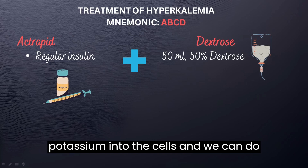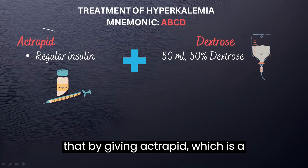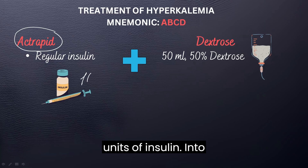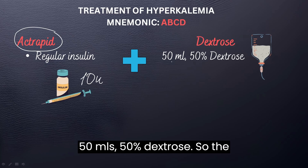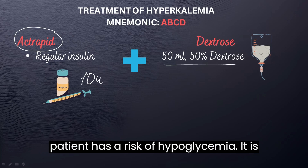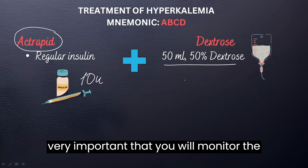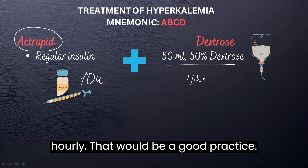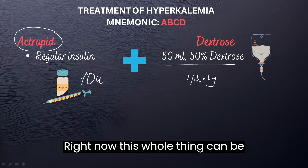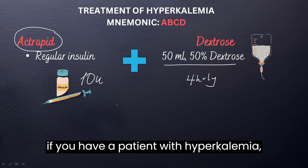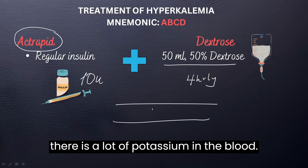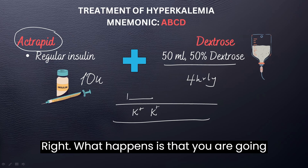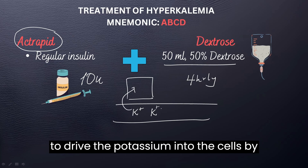The next thing is to shift the potassium into the cells. We can do that by giving Actrapid, which is a regular insulin. We can administer 10 units of insulin into 50ml of 50% dextrose. If the patient has a risk of hypoglycemia, it is very important that you monitor the glucose levels, say every 4 hours. Now, this whole thing can be repeated, but you must be careful because if you have a patient with hyperkalemia and there is a lot of potassium in the blood, you are going to drive the potassium into the cells by giving them insulin.